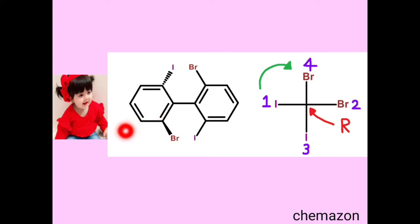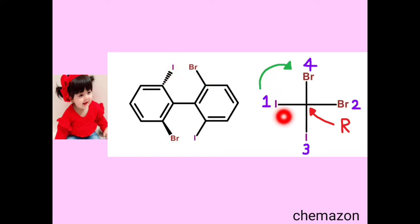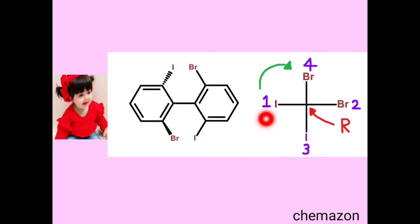Now let us understand with one more example where all four groups are different. From this perspective, imagine bromine on the right as your right hand, iodine on the left as your left hand, bromine here and iodine over here. The rules for assigning RS nomenclature remain the same as with cumulene molecules: the groups closer to the observer get the first and second priority. Iodine gets first priority and bromine gets second priority according to atomic number. The remaining two groups get priorities three and four. From 1 to 2 to 3 it is clockwise, so the absolute configuration is R.